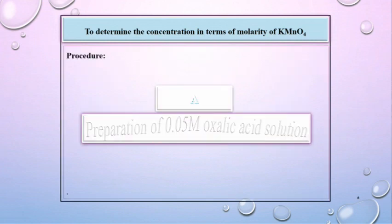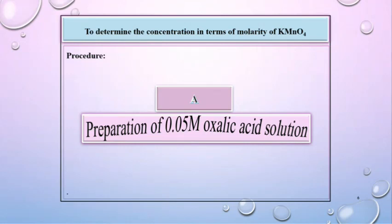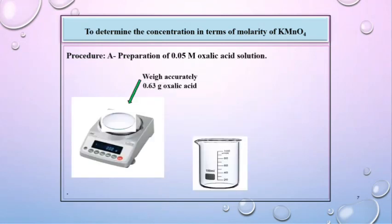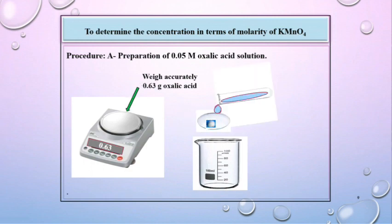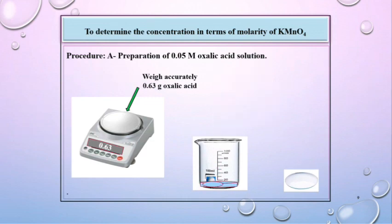Part A: preparation of 0.05 molar oxalic acid solution. Procedure for Part A: weigh accurately 0.63 gram of oxalic acid. Then transfer this substance in a clean and dry beaker and wash the watch glass with little amount of distilled water. Dissolve this substance in little amount of distilled water. Stir this solution well.